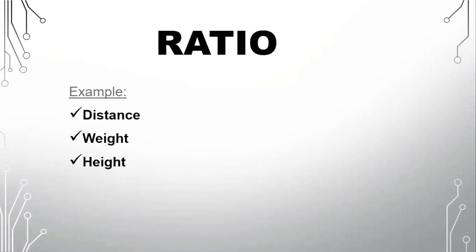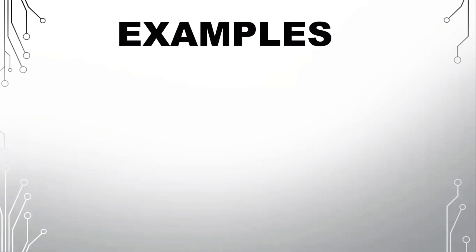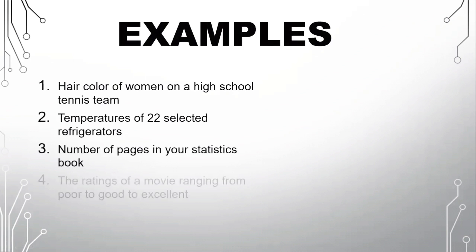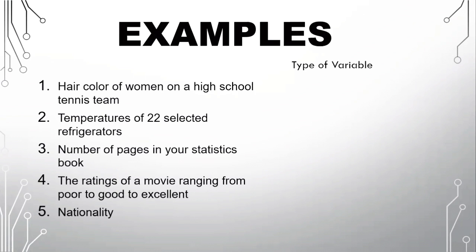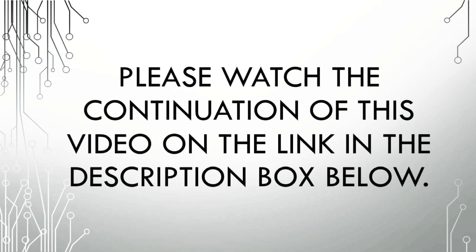Okay, so I have here some examples. And we're going to identify these five examples, what type of variable they are and what level of measurement. So if it's qualitative, we're going to write qualitative, and if it's quantitative, we have to figure out if it's continuous or discrete. And then identify the level of measurement. But before I forgot, let me remind you, in the four levels of measurement, nominal and ordinal are under qualitative variable, and interval and ratio are under quantitative variable. Thank you.